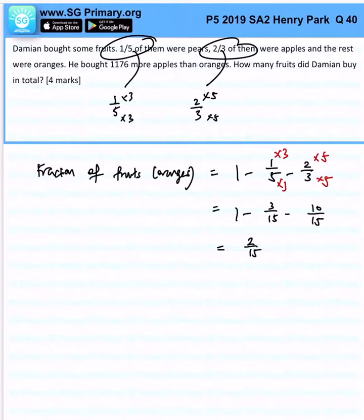Now, he said that he bought 1,176 more apples than oranges. Okay, so apples is 10 over 15, am I right? And oranges is 2 over 15, can you see? So from here, right...